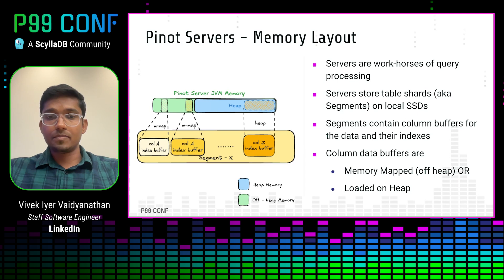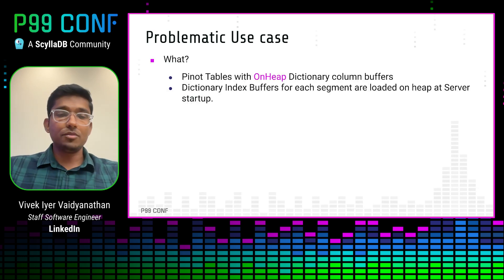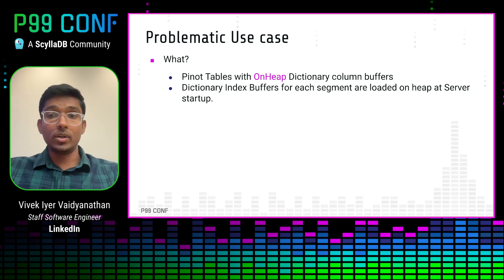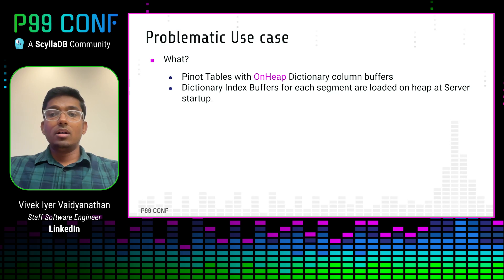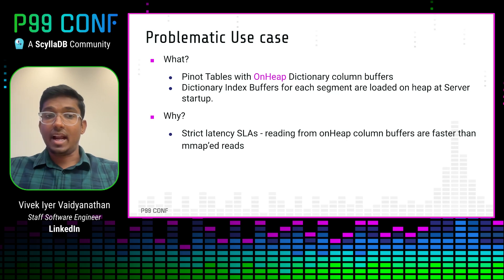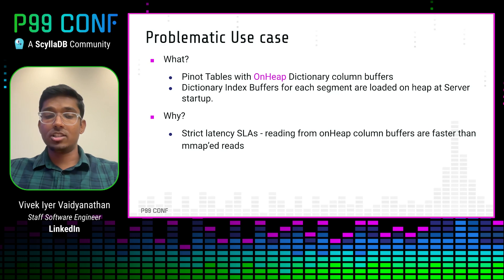With this context, let's jump to the problem statement. Our use case of interest is a particular Pinot table that contained a string column with a dictionary index configured to be loaded directly on the heap. Note that whenever we configure a column buffer to be loaded on the heap, this happens at server startup and is maintained in heap memory throughout the server's lifetime. We decided to do this to meet strict latency SLAs where there were filters on the column — reading from on-heap column buffers is faster than memory-mapped reads, which must page data in and out of memory.